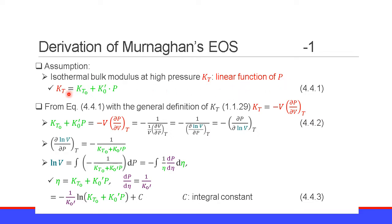Therefore, the isothermal bulk modulus at high pressure is equal to the isothermal bulk modulus at zero pressure, KT0, plus the pressure derivative of the isothermal bulk modulus, K0 prime, times pressure P.